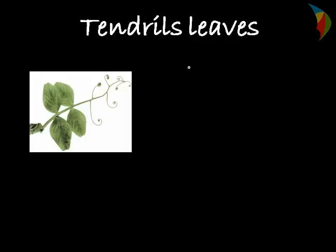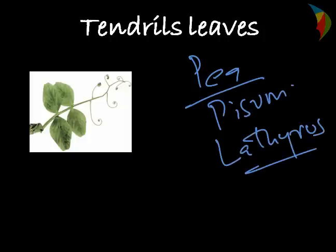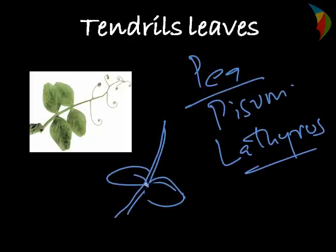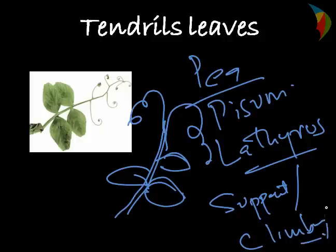The first type is tendril leaves. Tendril leaves are mostly found in the genus Pisum or the genus Lathyrus. Here the tip of the leaf is modified into the form of tendrils. This helps in supporting and climbing, giving support to the plant during its growth phase.